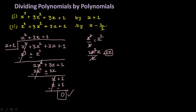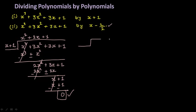Now we are going to solve the second question. Here your divisor will be x minus 1 by 2, and your dividend will again be x cube plus 3x square plus 3x plus 1.